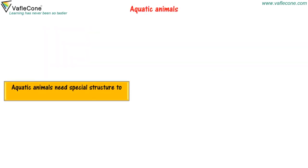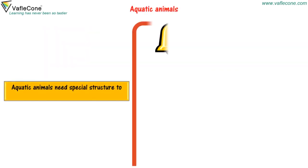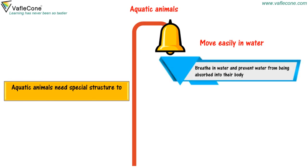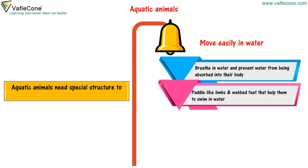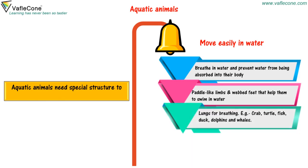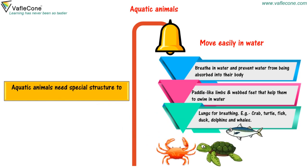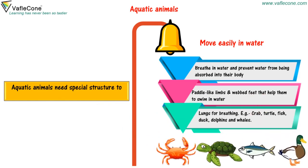Aquatic Animals need special structures to move easily in water, breathe in water, and prevent water from being absorbed into their body. They have paddle-like limbs and webbed feet that help them swim. They need lungs for breathing. For example, crab, turtle, fish, duck, dolphins, and whales.